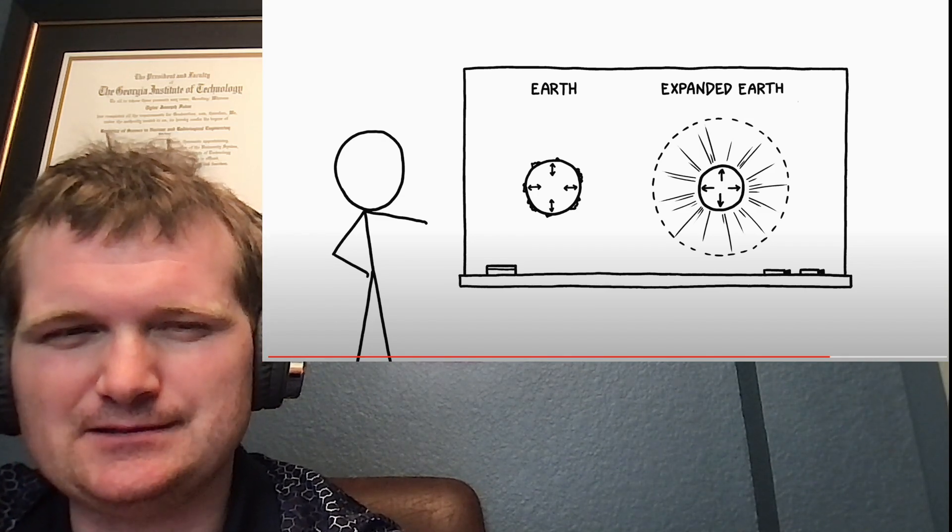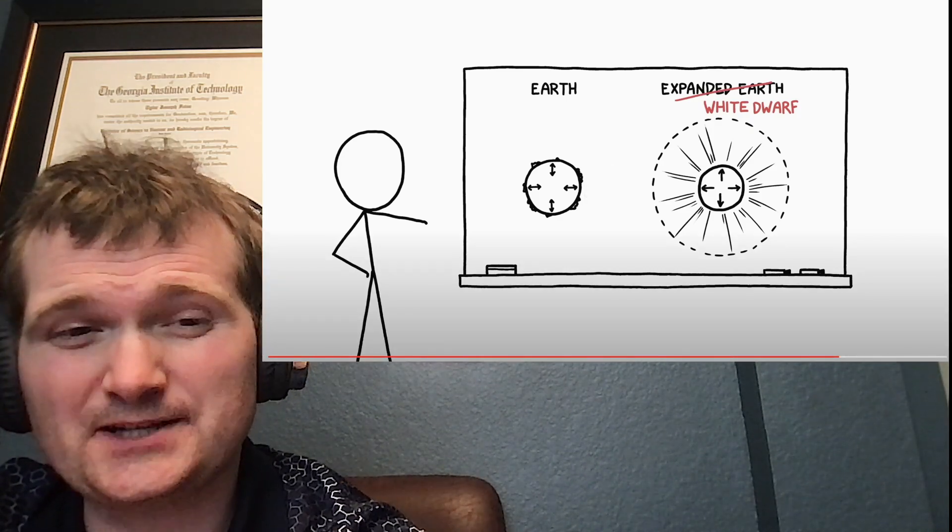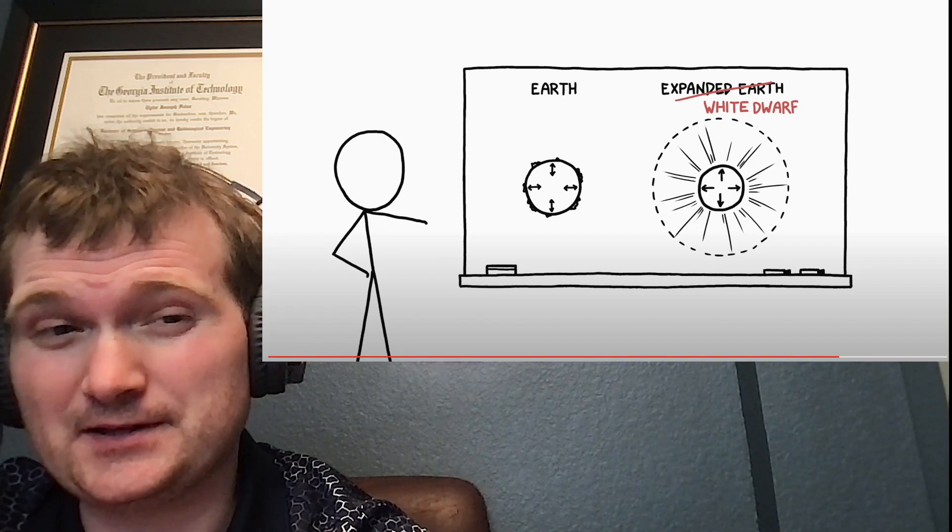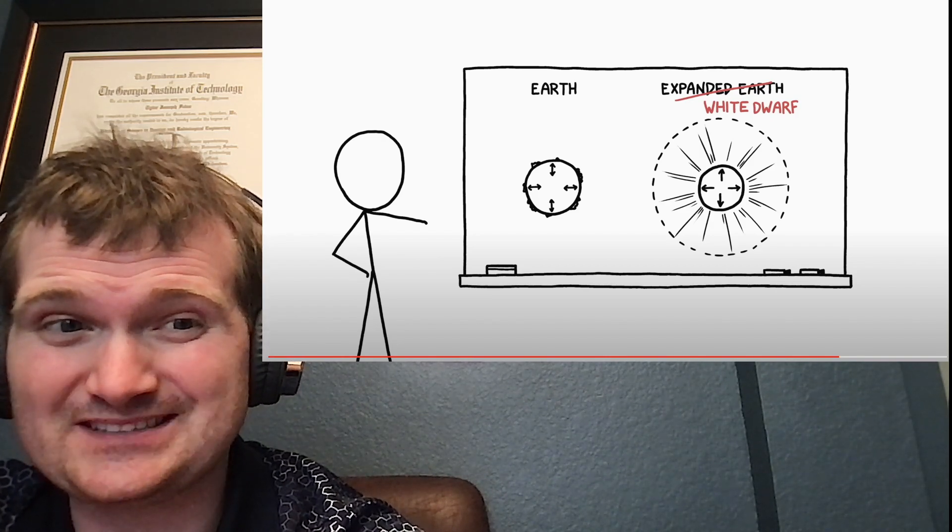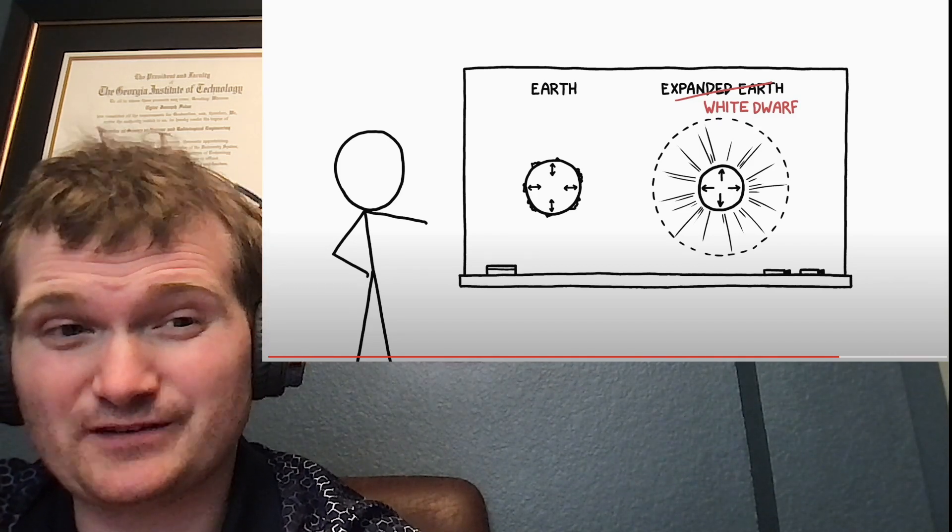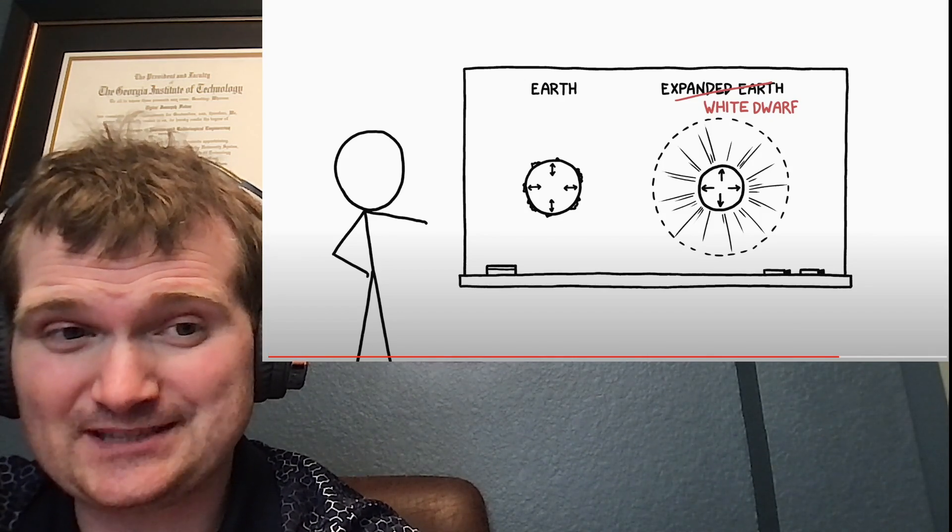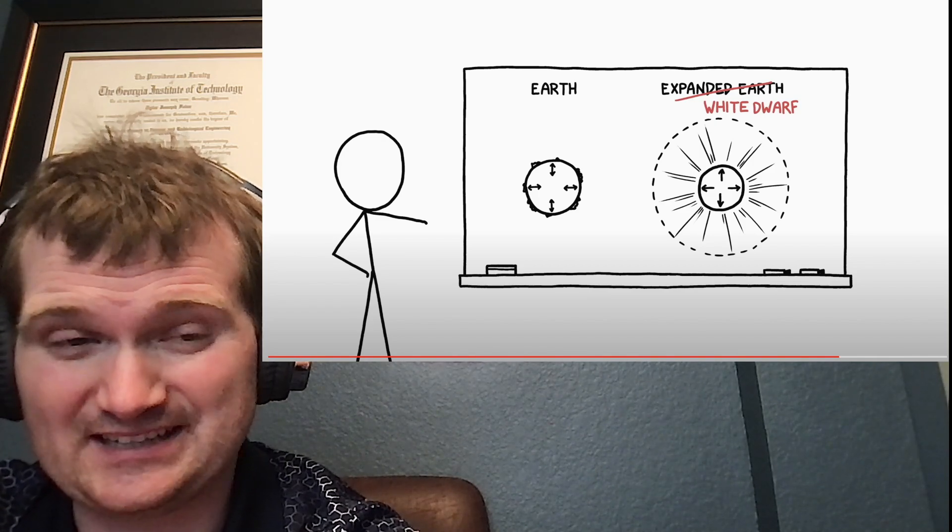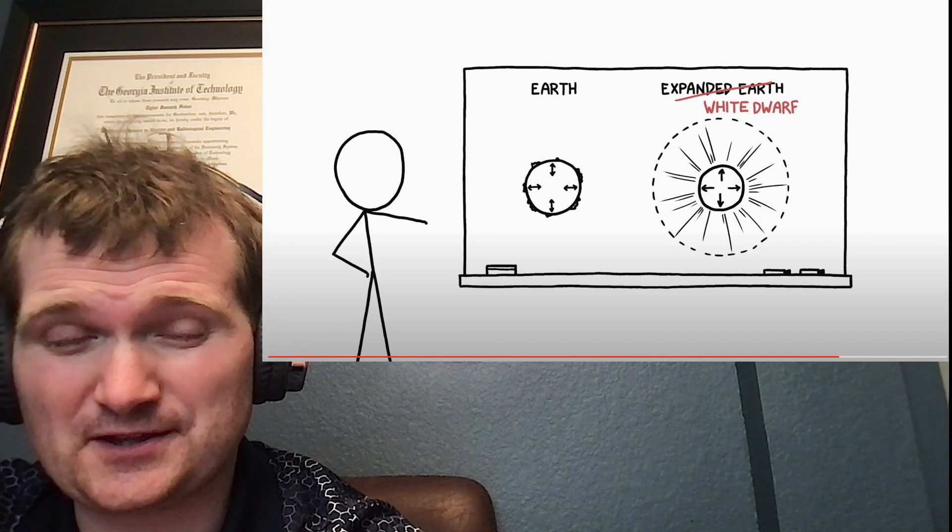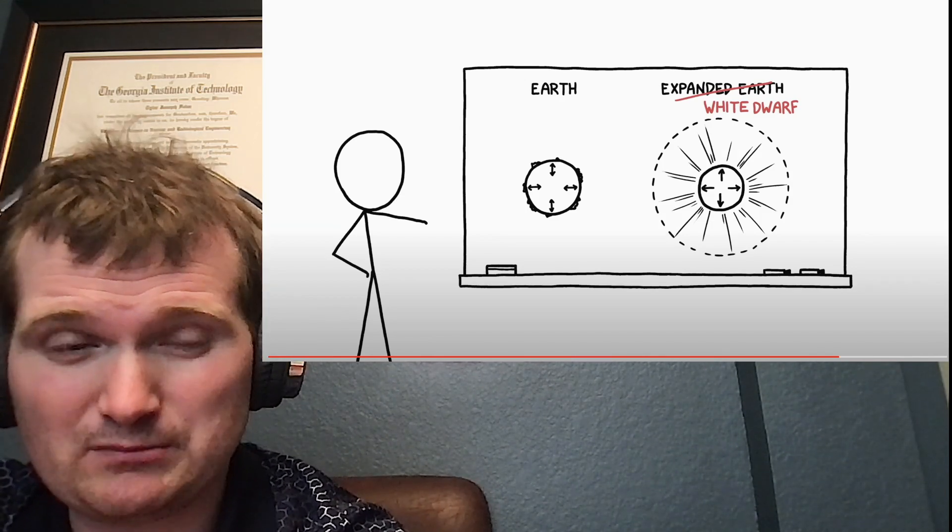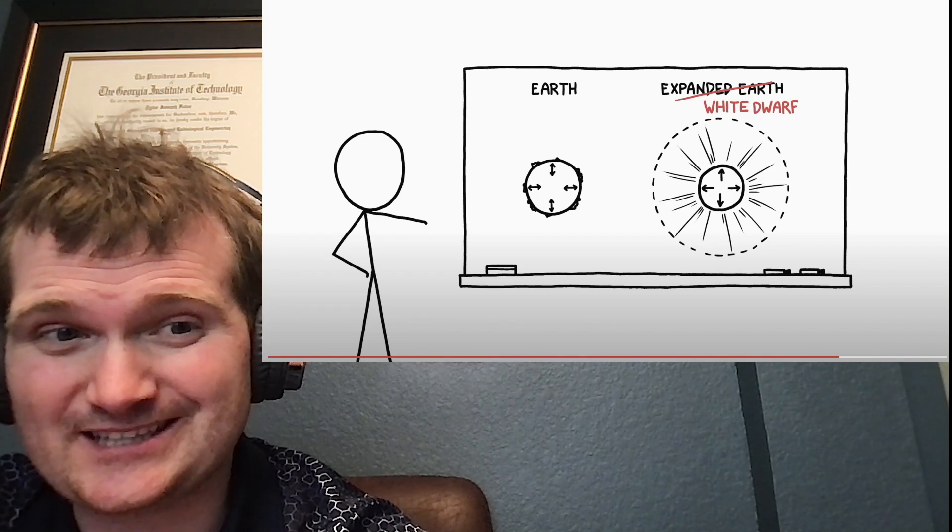Into something like a sputtering white dwarf star held up by electron degeneracy pressure. So electron degeneracy is all about the Pauli exclusion principle, or two electrons cannot occupy the same quantum state. And as matter is compressed, electrons find themselves in higher and higher energy states. And this is quantum, so temperature doesn't matter. Even at absolute zero, this still holds true, since we're talking quantum states, not individual thermal kinetic motions.